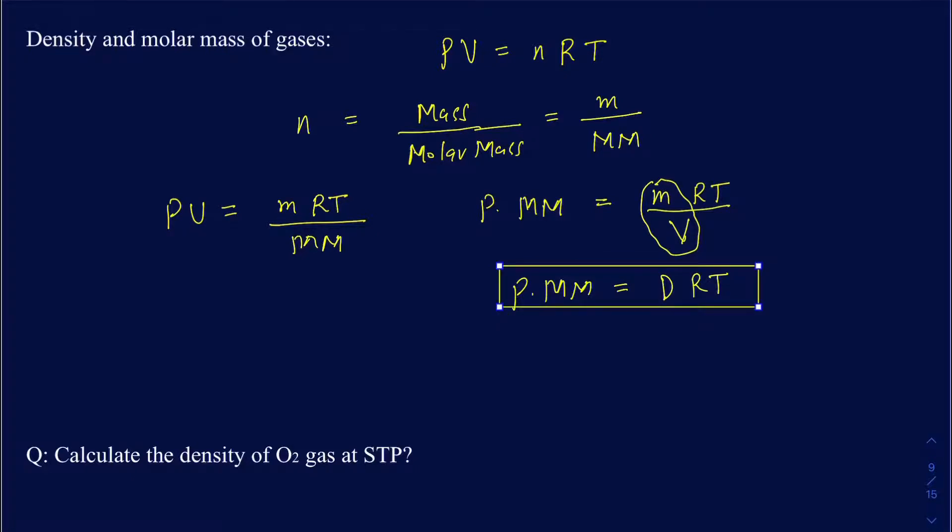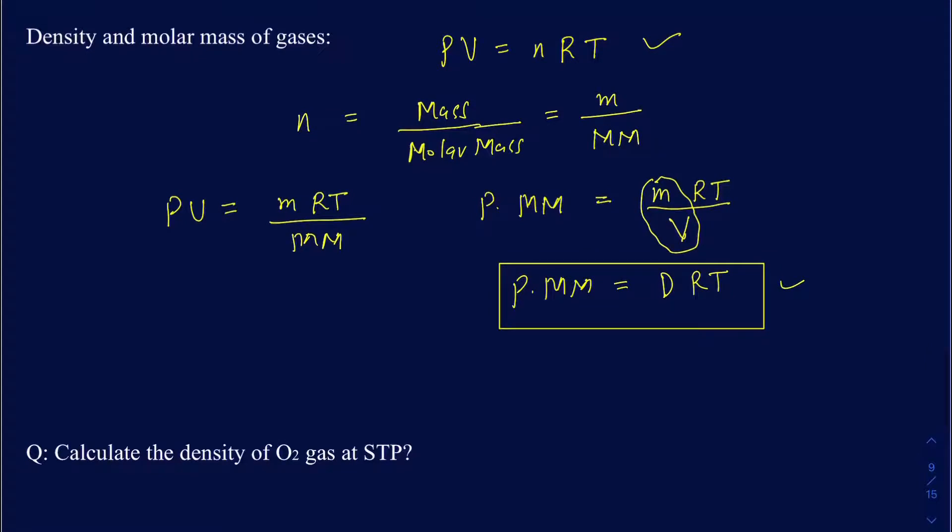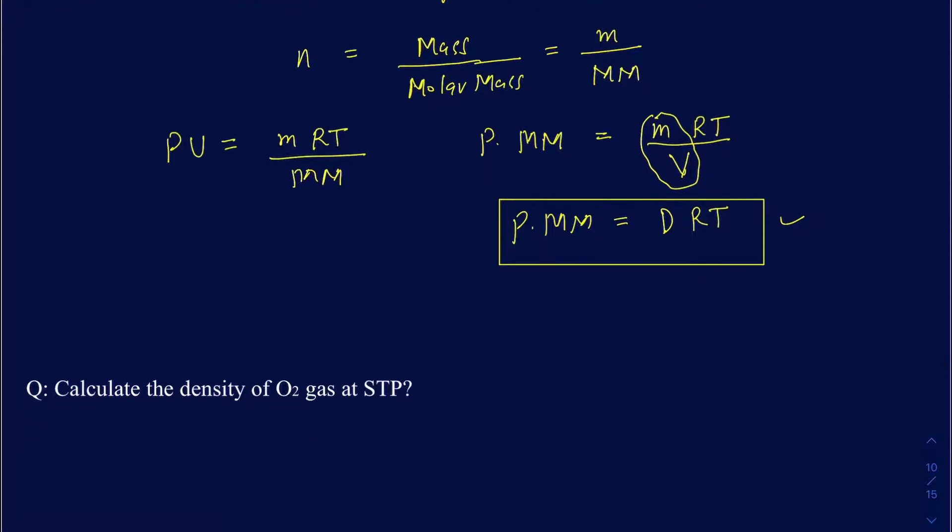If it helps you memorizing this equation, like saying your ideal gas equation is PV equals nRT, then your density equation is going to be P MM equals DRT. That's how you want to memorize it. You have the molar mass in there, you got the density in there. So you could find both of those depending on if you're given the other variables.